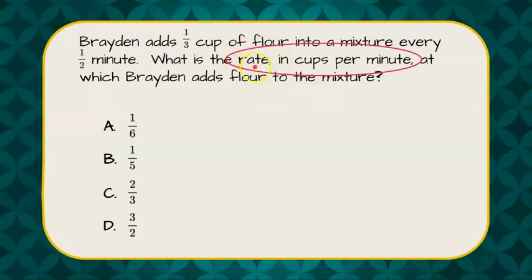So a rate is a ratio, so we're going to find the ratio of cups to minutes. We are given that there is one-third of a cup in half a minute, so cups to minutes.